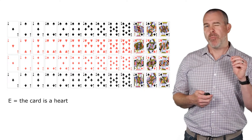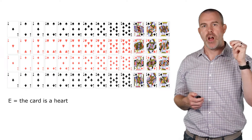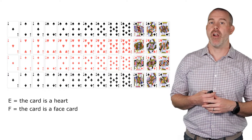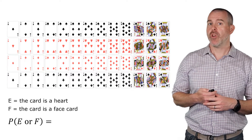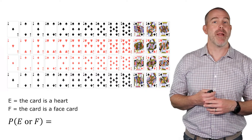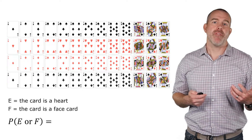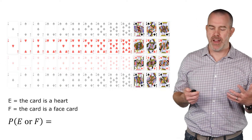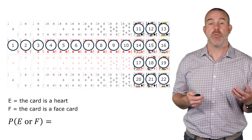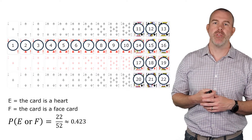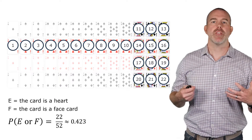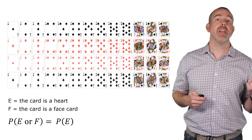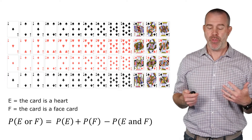Event E is that the card is a heart, and event F is that the card is a face card. Suppose we randomly draw a card and want to find the probability of E or F — that is, the probability that it's a heart or a face card. You can count them up: there are 22 such cards, so 22 out of 52 is about 0.423. Using the addition rule, that's the probability of E plus the probability of F minus the probability of both E and F.